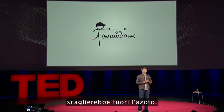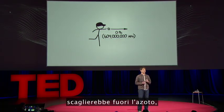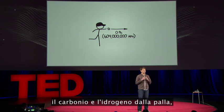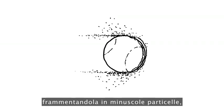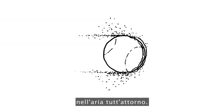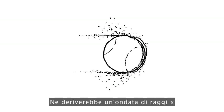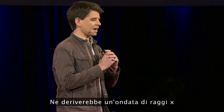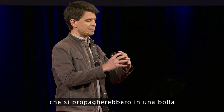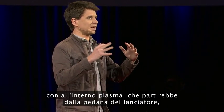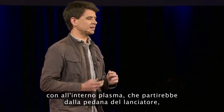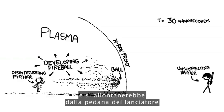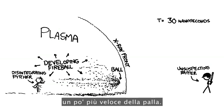The collisions with these air molecules would knock away the nitrogen and carbon and hydrogen from the ball, fragmenting it into tiny particles, and also triggering waves of thermonuclear fusion in the air around it. This would result in a flood of X-rays that would spread out in a bubble along with exotic particles and plasma inside, centered on the pitcher's mound. And that would move away from the pitcher's mound slightly faster than the ball.